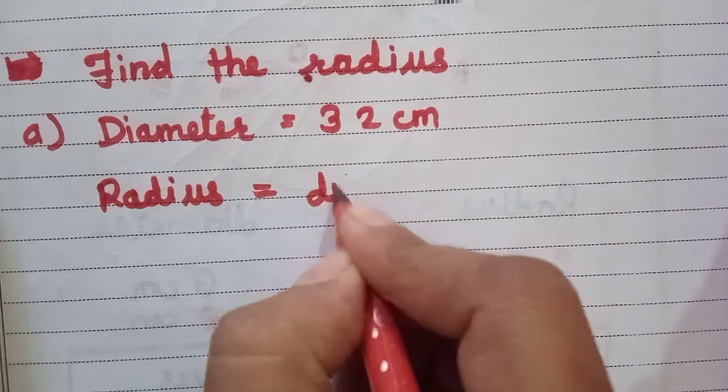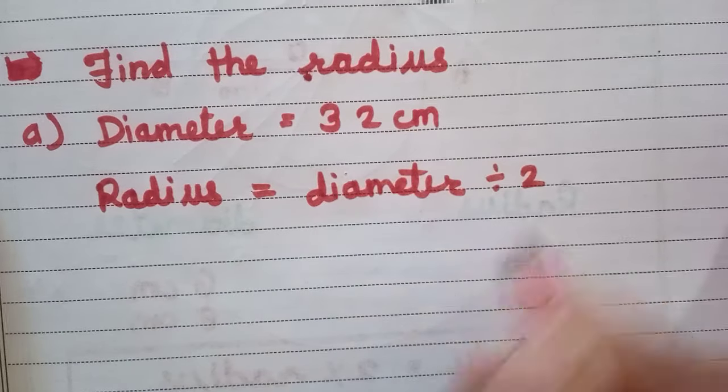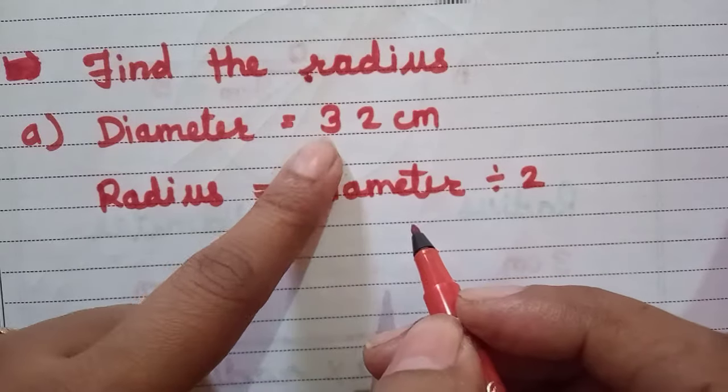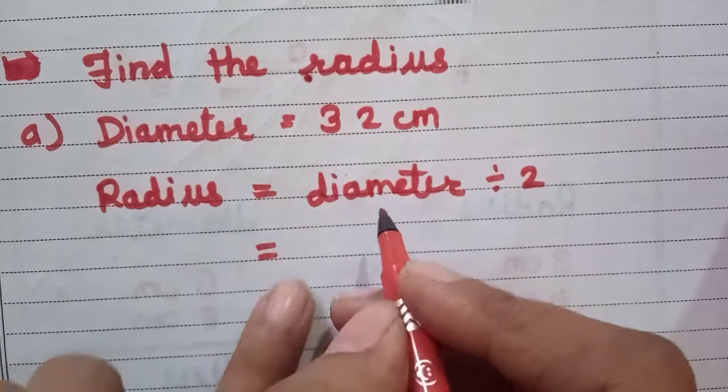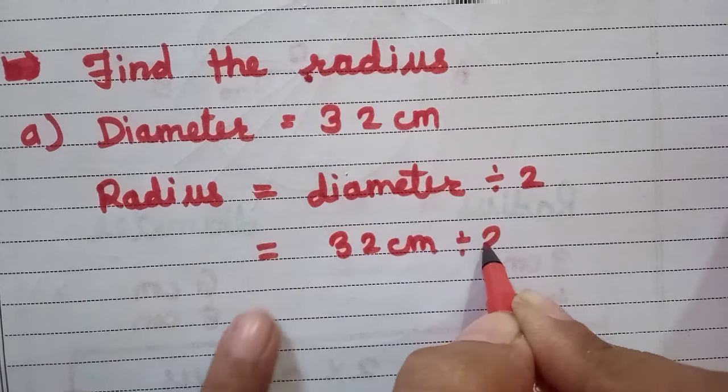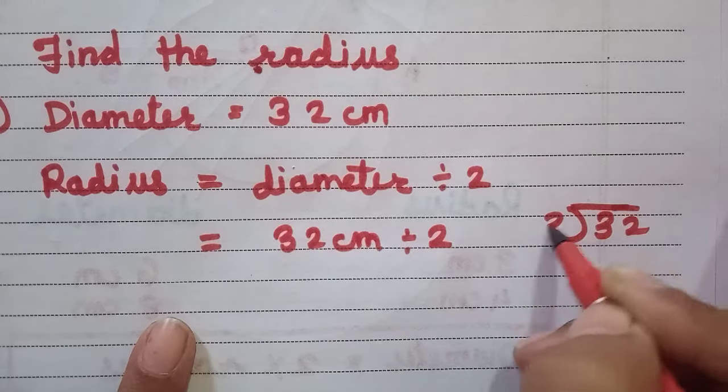What is our diameter? Diameter is given: diameter equals 32 centimeter. So write 32 centimeter here and divide by 2. Divide this 32: two ones are two, one left, two down, two sixes are twelve, zero.